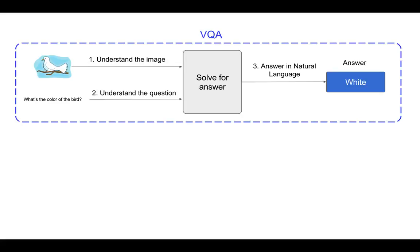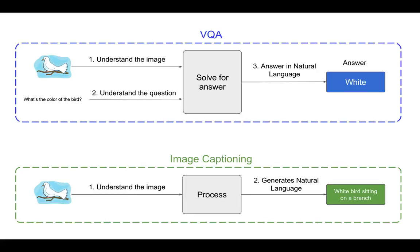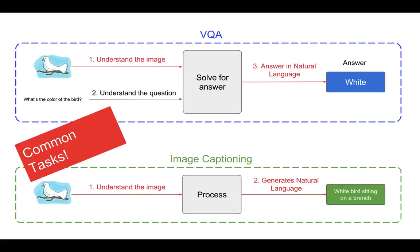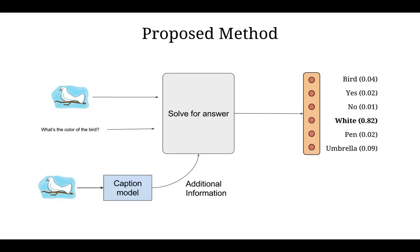At an abstract level, we first understand the image, then understand the question, and then finally try to get the answer. Similarly, an image captioning model also understands the image and then generates natural language out of it. Since these are common tasks, an image captioning model can help VQA to get better results.